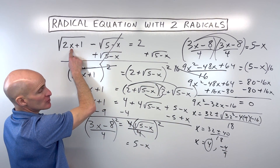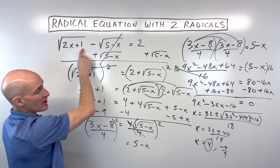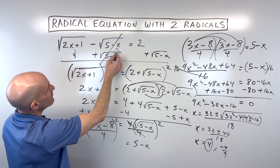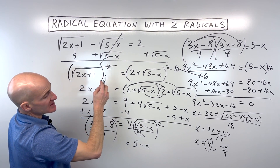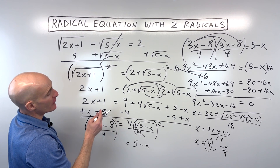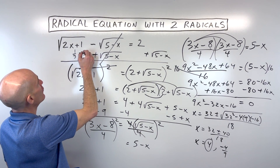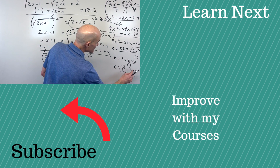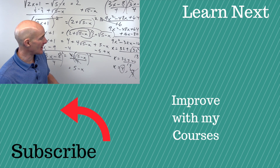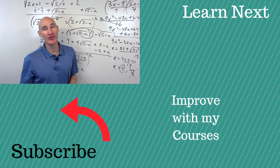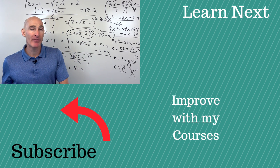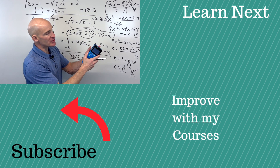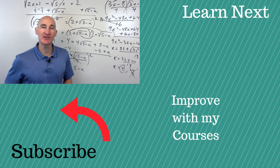For x equals negative 4 ninths: 2 times negative 4 ninths is negative 8 ninths, plus 1 is 1 ninth, and the square root of 1 ninth is 1 third. Then 5 minus negative 4 ninths is 5 plus 4 ninths, which is 49 ninths, and the square root of that is 7 thirds. So 1 third minus 7 thirds is negative 6 thirds, which is negative 2 — not positive 2. This is an extraneous solution. You can make a simple mistake by thinking you're done without checking back in the original problem. For more practice, follow along to my other video on solving radical equations.